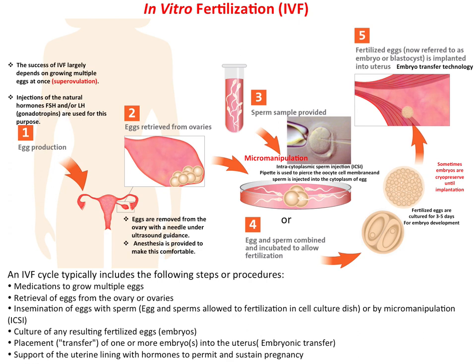These gonadotropin hormones can be injected into women from day 2 to day 10 of the menstrual cycle, and after 10 days multiple eggs are produced inside the ovary of that woman.